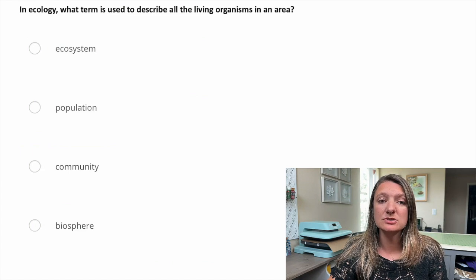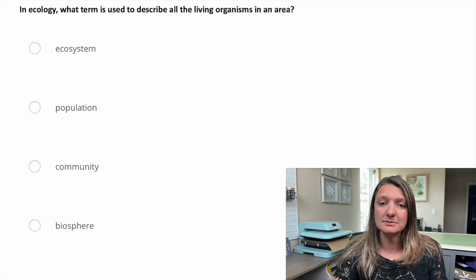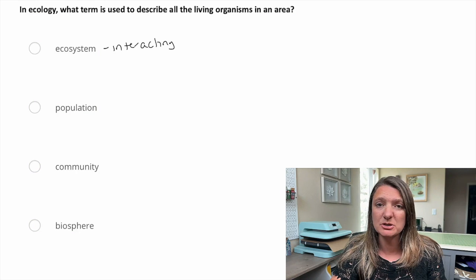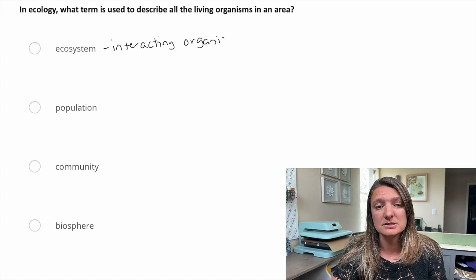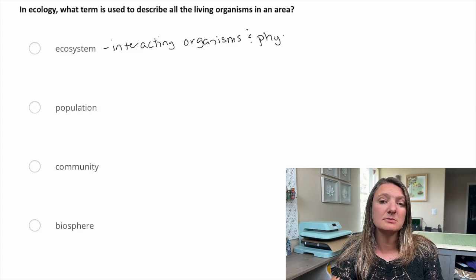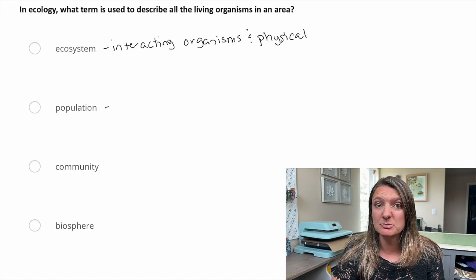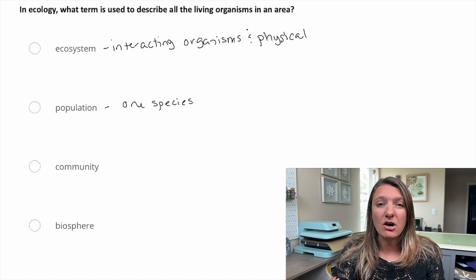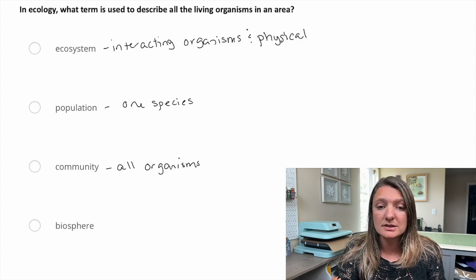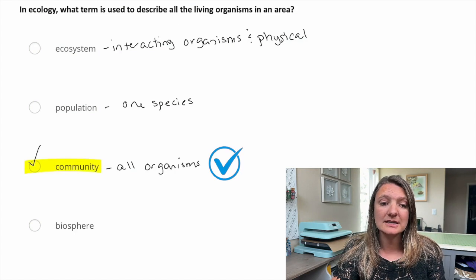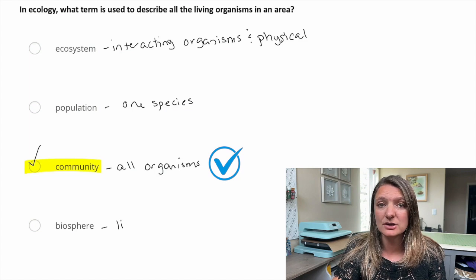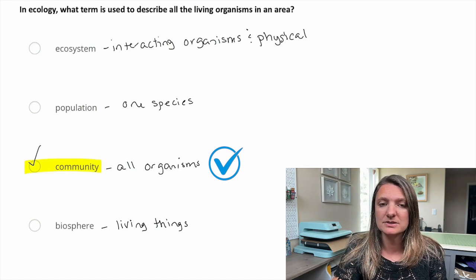Question four. In ecology, what term is used to describe all living organisms in an area? An ecosystem is where you have the interactions of different species in an area along with the physical environment — so it includes interacting organisms and the physical environment, which is more than what we're looking for. Population refers to only one specific species in an area. Community, on the other hand, is all species living in that area — so community is our correct answer, C. And just to cover the last definition: biosphere includes anywhere living creatures exist, including the atmosphere — any part of the earth where living creatures are. Our answer is C, community.